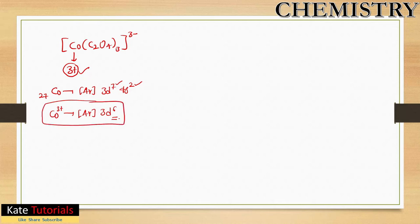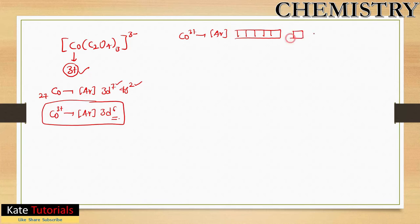For Co³⁺, the configuration [Ar] 3d⁶ can be written out with five d orbitals: dxy, dyz, dzx, dx²−y², and dz². The 4s and 4p orbitals remain empty. Filling six electrons according to Hund's rule, we first place them singly, then pairing occurs.